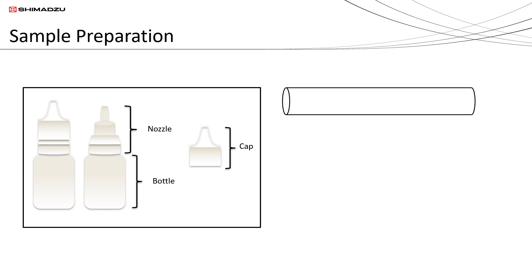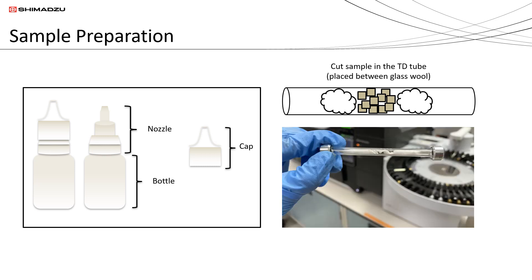In direct TD analysis, an empty thermal desorption tube or TD tube with no adsorbent is used. The sample was cut into small pieces and placed inside the TD tube. Glass wool was positioned on each side of the sample to prevent the sample from being expelled out of the tube during the analysis.